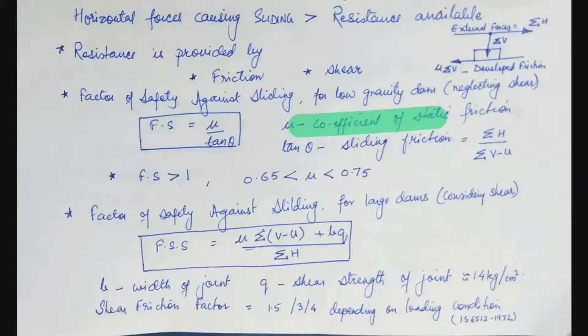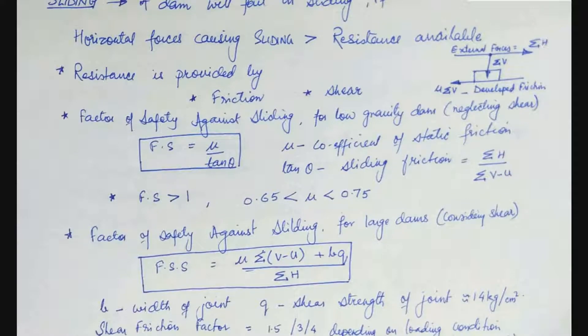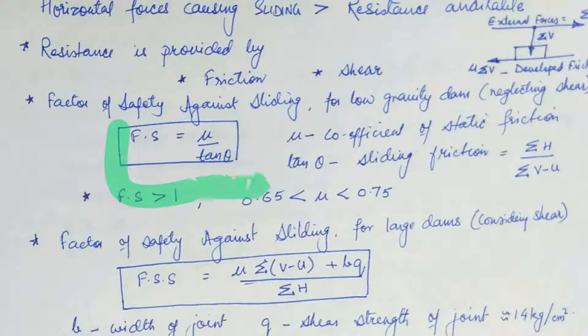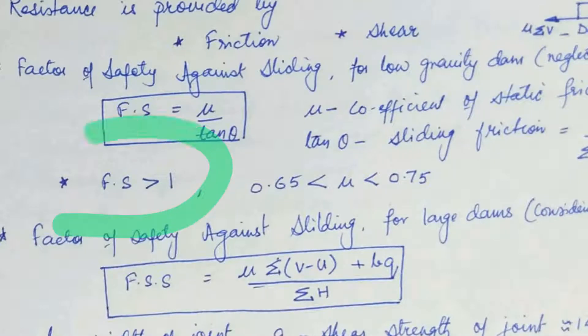Shear strength comes into play because of interlocking of stones in mezzanary dam. And the factor of safety against sliding for low gravity dam, if I am neglecting shear here in case of low gravity dams. In that case, the factor of safety is actually equal to mu upon tan theta. So here, what is mu, the coefficient of static friction, with its value varying between 0.65 to 0.75. And tan theta is the sliding friction, which is actually equal to sigma h upon sigma v minus u. For safety, FOS, factor of safety should be taken more than 1.